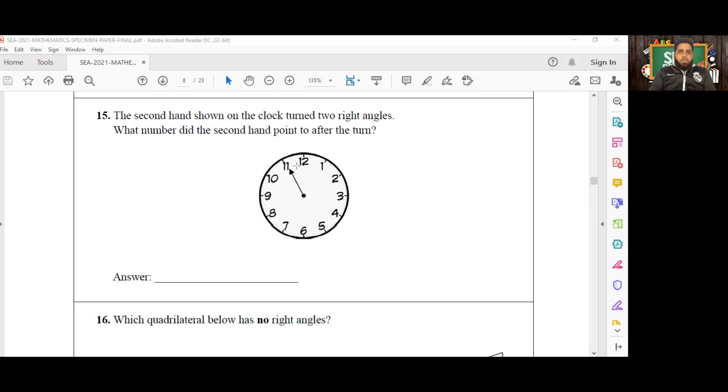So each quarter turn or each right angle will pass through one, two, three of the numbers on the face of the clock. Our first quarter turn will take the second hand to two, and the second quarter turn will take the second hand to five. So the number it's pointing to at the end of the two right angles or two quarter turns is five.